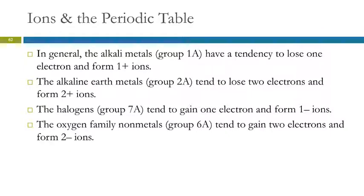In general, the alkali metals, group 1A, they tend to lose one electron and form plus one ions. Group 1A, one plus. The alkaline earth in group 2A form two plus ions. You see a pattern here? Group 1A is one plus, group 2A is two plus.